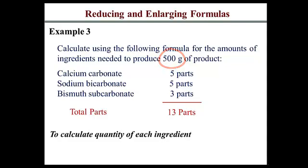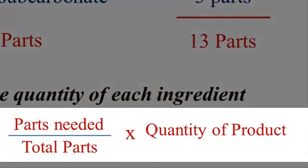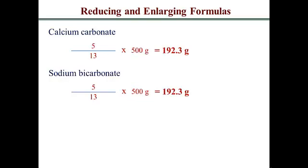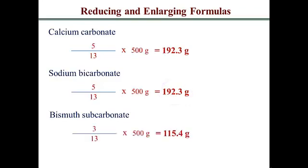To calculate the quantity of each ingredient, divide the parts of that ingredient by the total parts and multiply by the quantity required. Calcium carbonate: 5/13 × 500 = 192.3 grams. Sodium bicarbonate: 5/13 × 500 = 192.3 grams. Bismuth subcarbonate: 3/13 × 500 = 115.4 grams. This is how much you need to prepare 500 grams of your preparation.